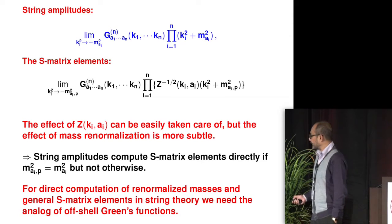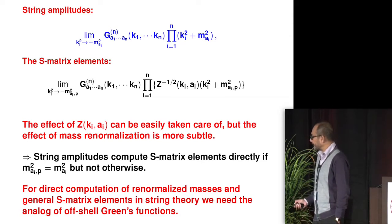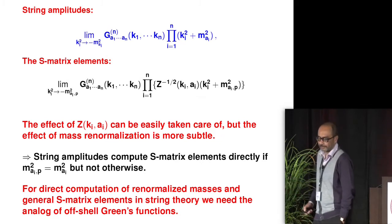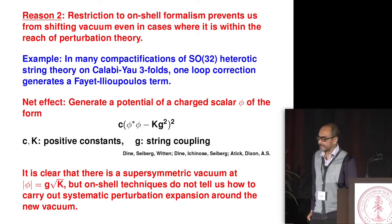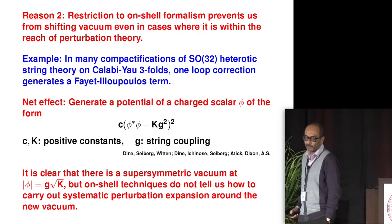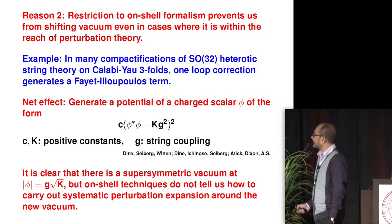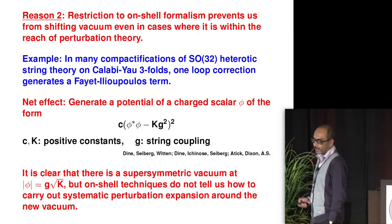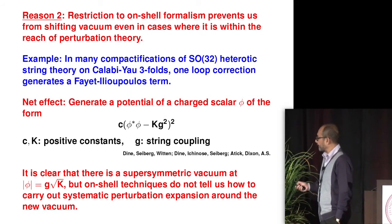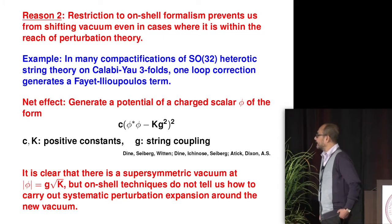The effect of wave function renormalization is not very hard to take care of — if that was the only difference, we could handle it by looking at appropriate factorization properties. But the effect of mass renormalization is more subtle. Because of this, string amplitudes directly compute S-matrix elements only if the physical mass square and the tree-level mass squares are the same, but not otherwise. If we want to directly compute renormalized masses and general S-matrix elements in string theory, we need the analog of off-shell Green's functions.